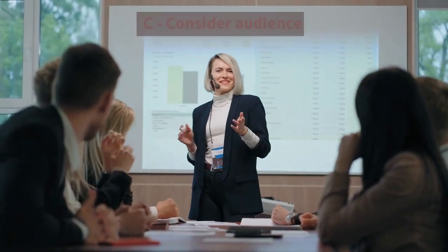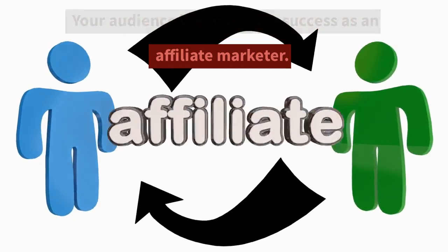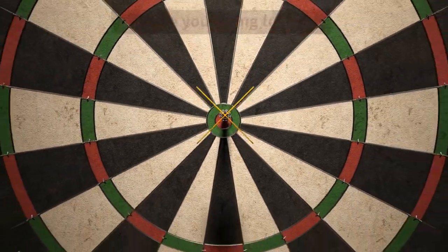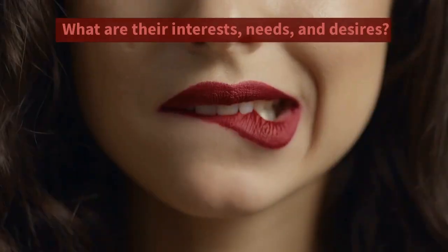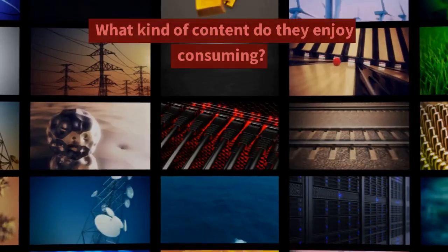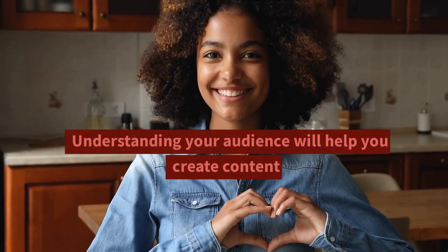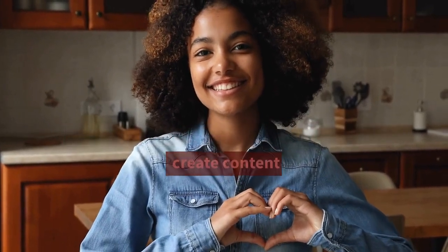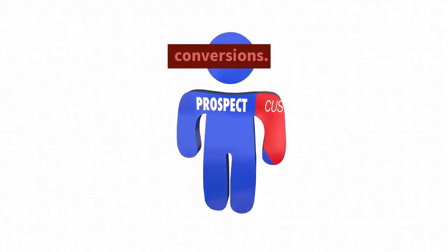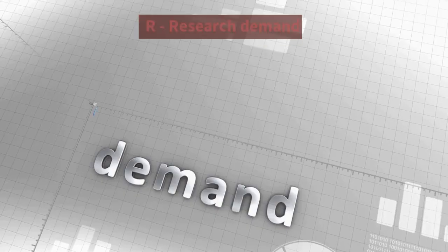C - Consider audience. Your audience is key to your success as an affiliate marketer. Who are you trying to reach? What are their interests, needs, and desires? What kind of content do they enjoy consuming? Understanding your audience will help you create content that resonates with them and drives conversions.